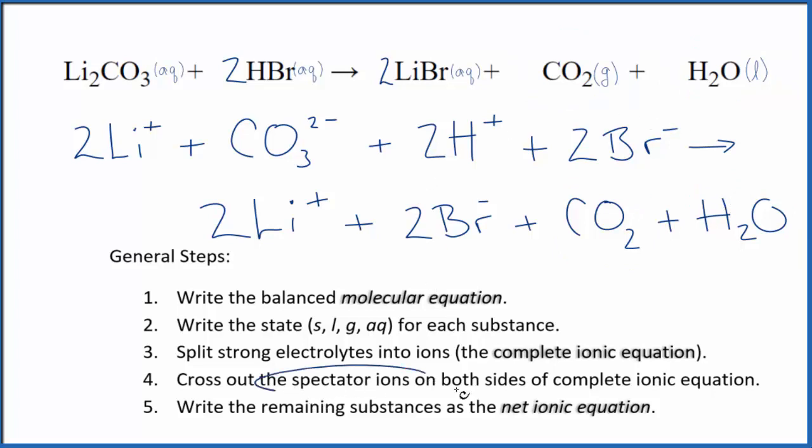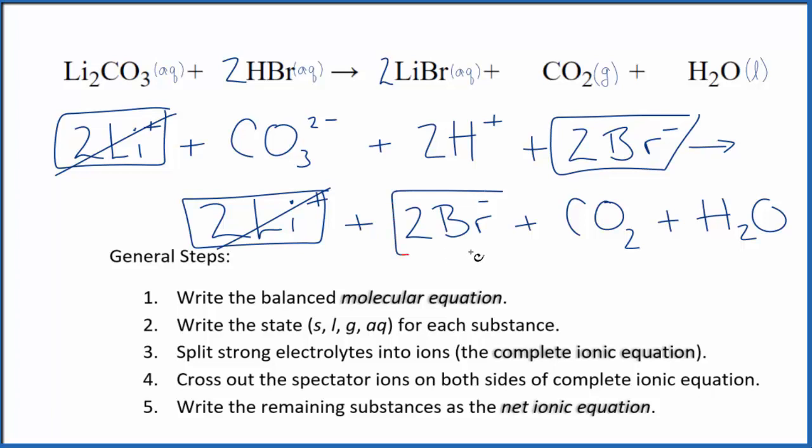Now we can cross out the spectator ions. They're on both sides. So I can see in the reactants here, I have two lithium ions and in the products, two lithium ions, spectator ions. We cross those out and two bromide ions in the products. Again, two bromide ions. So those both cancel out.